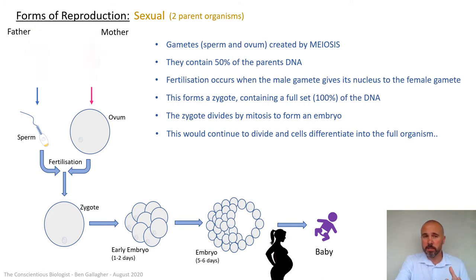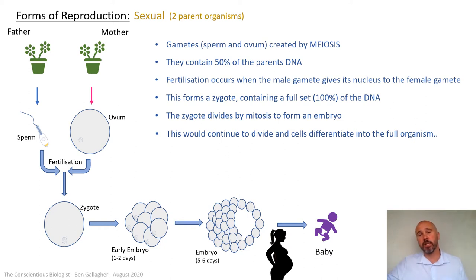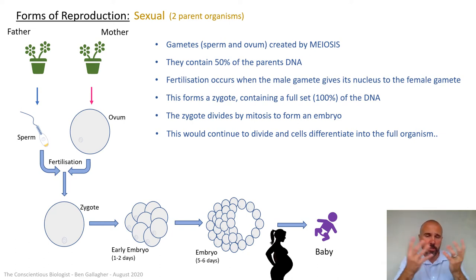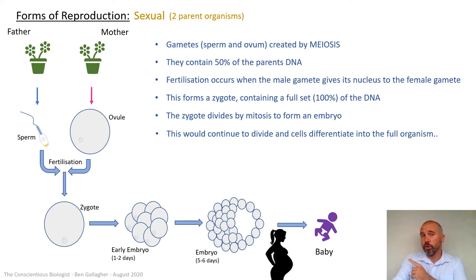Let's now look at plants. If I replaced both parents with plants — flowers have both male and female parts. They have the male parts that release the pollen: the anthers and the filaments. And the carpel is the female part that produces the ovule in the ovary. Both of those still produce gametes. In the female part it's called an ovule, not an ovum. In the male part, it doesn't produce sperm — it produces pollen.